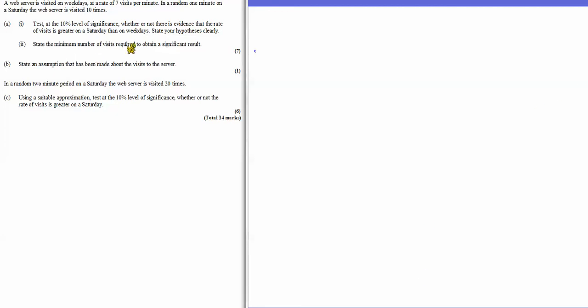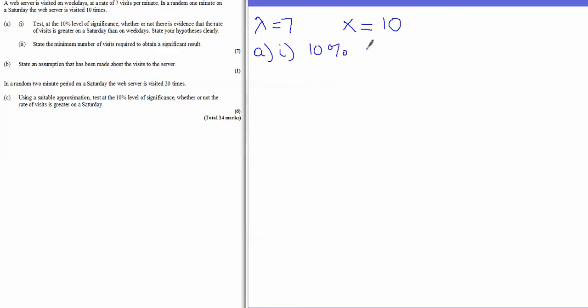This video looks at an S2 question on hypothesis testing. We're told there is a rate of 7 visits per minute, so we know immediately it involves the Poisson distribution. We have lambda equals 7, and our test statistic is that in one random minute there are 10 visits to the server. For Part A, we test at a 10% level of significance whether there is evidence that the rate of visits is greater on a Saturday — that is, whether 10 is large enough to suggest the rate may not be 7.